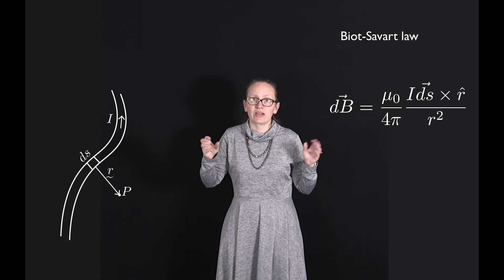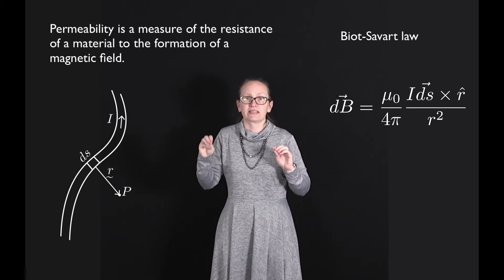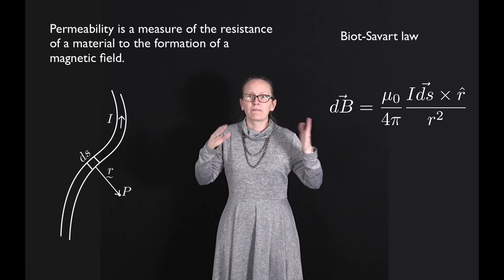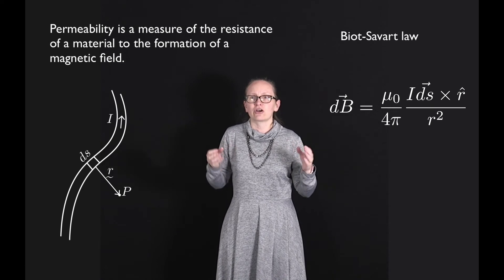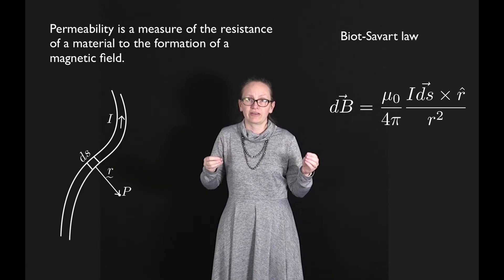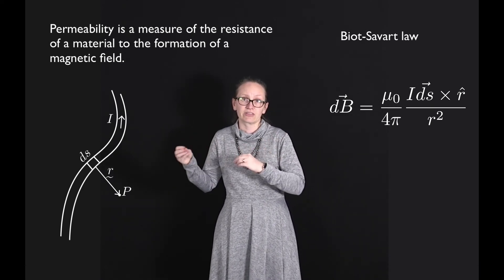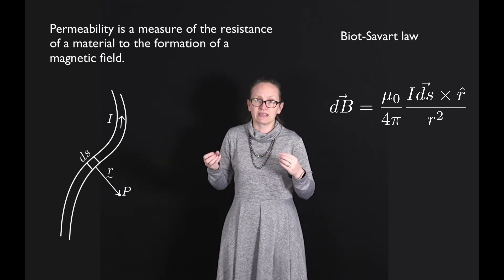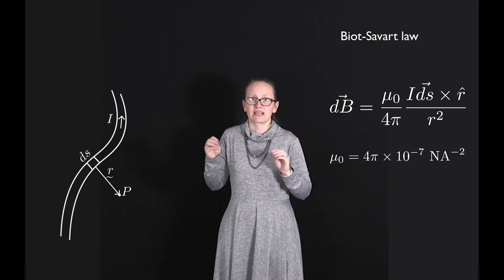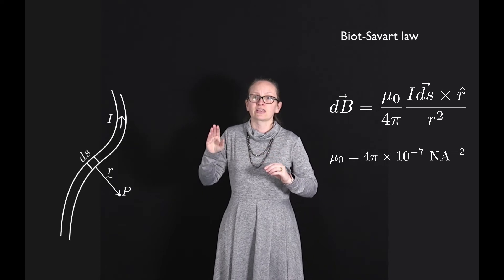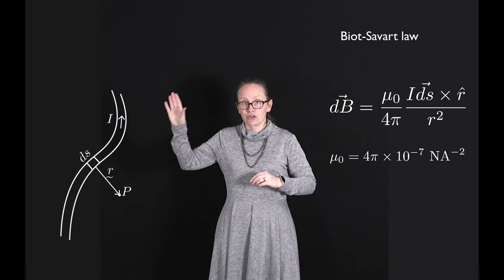In this equation mu naught is the permeability of free space. Permeability is a measure of the resistance of a material to the formation of magnetic fields in that material. The permeability for free space is equal to 4 pi times 10 to the minus 7 newtons ampere to the minus 2.